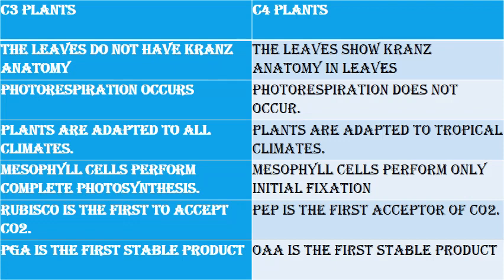Main differences between C3 and C4 plants: 1) C3 leaves do not have Kranz anatomy; C4 leaves show Kranz anatomy. 2) Photorespiration occurs in C3 plants; photorespiration does not occur in C4 plants. 3) C3 plants are adapted to all climates; C4 plants are adapted to tropical climates. 4) In C3, mesophyll cells perform complete photosynthesis; in C4, mesophyll cells perform only initial fixation. 5) In C3, rubisco is the first to accept CO2; in C4, PEP is the first acceptor of CO2. 6) In C3, PGA is the first stable product; in C4, OAA is the first stable product.